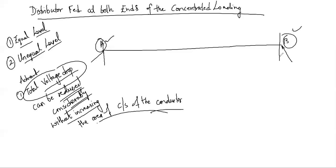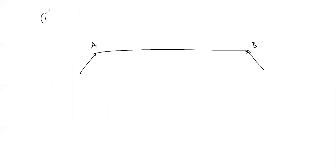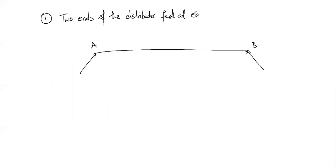For example, if you have a 100 km or 250 km distributor line, A and B might be supplied with equal or unequal level of voltages. Let us look at the first case: two ends of the distributor A and B fed at equal voltages.